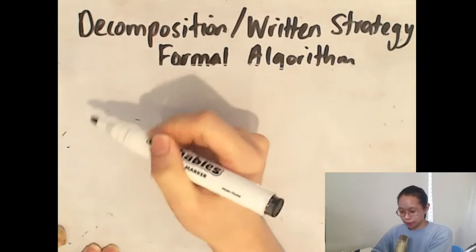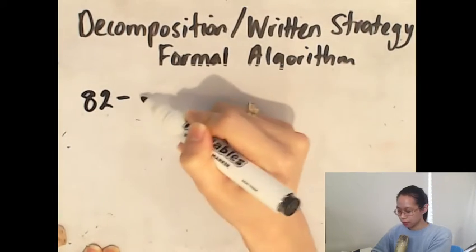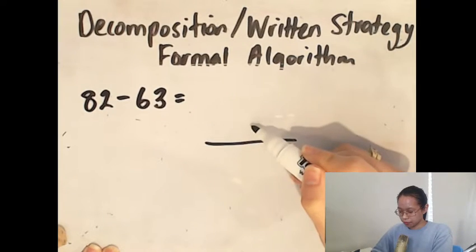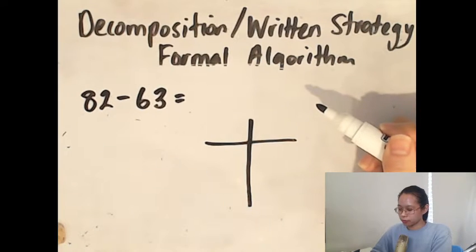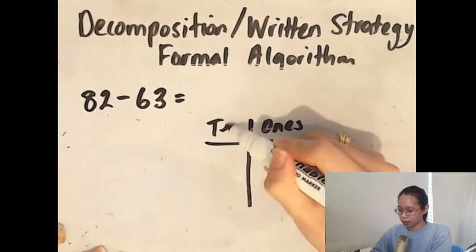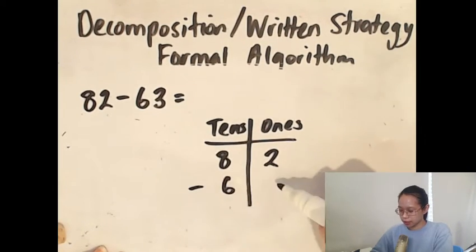So what if we have the number sentence 82 minus 63? Let's put them into the correct place value columns. We've got two digits, so we need ones and tens. 82 minus 63.